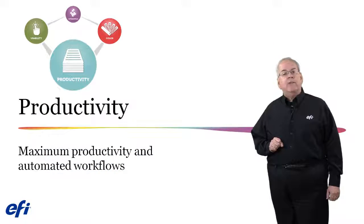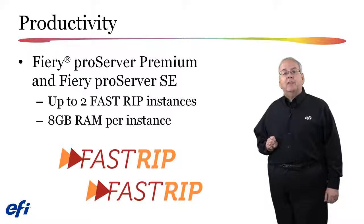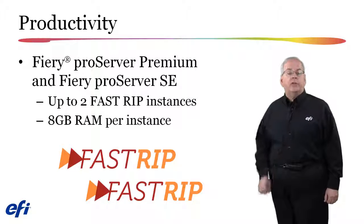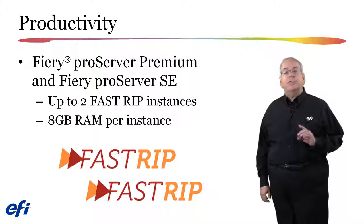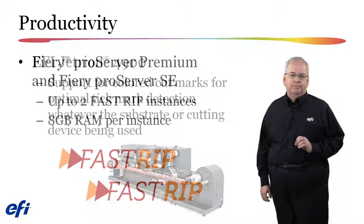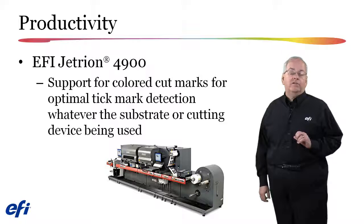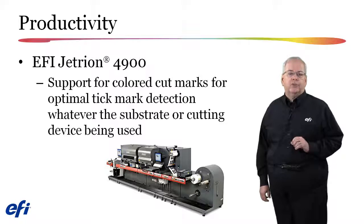Fiery 6.4 also includes productivity features. If you are running Fiery XF 6.4 on a Fiery Pro server, you can now have either one or two instances of the fast RIP running on your system — one fast RIP instance per 8GB of installed RAM. Additionally, support for colored cut marks has been added for the EFI Jetrion 4900 printer, making it easier to read the marks on certain colored substrates.